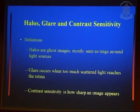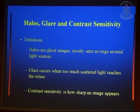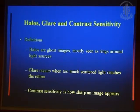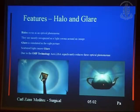Let us understand what halos and glare are. Halos are ghost images — mostly seen as rings around light sources. If you have a point source of light like a bulb, you see light halos, all the rings around it, because of parafoveal stimulation. Glare occurs with too much light and scattered light on the retina — you see so much brightness that the main image gets suppressed. Contrast sensitivity is how sharply you see the image at various distances. The right-hand side image shows halos and the left side shows glare — too much brightness.